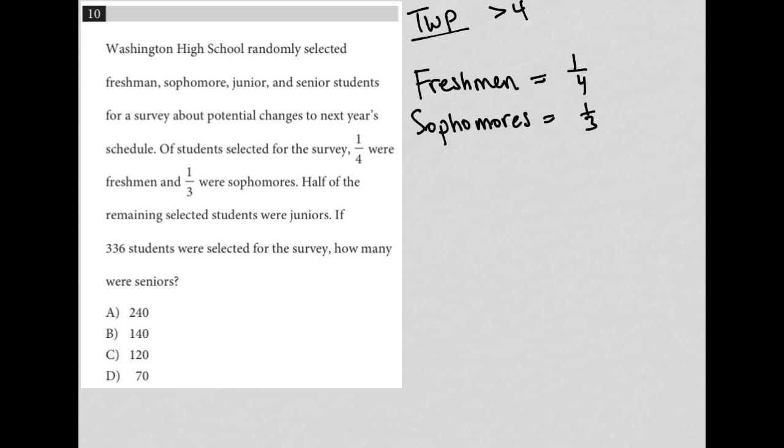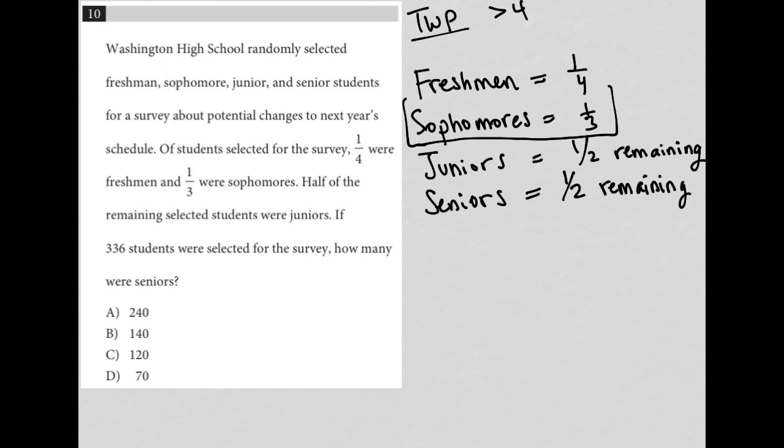Half of the remaining students were juniors. So I'm gonna say juniors equals, and now this is tricky. So it's not half of the total, it's half remaining. So keep that in mind. And obviously, if juniors are half remaining, seniors must be the other half of the remaining. Hopefully that makes sense. So the question doesn't tell us that, but that's the only thing that makes sense. Right, we take these guys together and we say, okay, now whatever's left over, we're splitting it half to juniors and half to seniors.